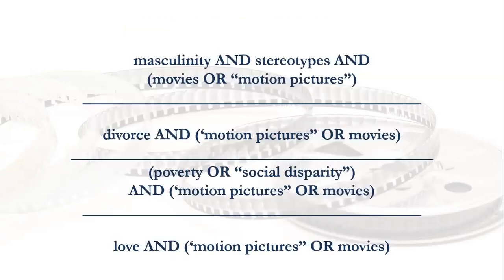You can combine these terms — here are some examples. The first one is 'masculinity AND stereotypes AND (movies OR motion pictures).' Note that I put the OR terms in parentheses, and that forces the database or Google to do that part of the search string first and then the rest. Otherwise it reads left to right and you get different search results. There are other examples shown that you might use for different themes you're searching for in this class.